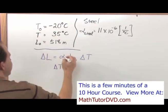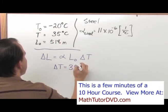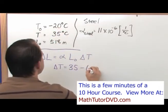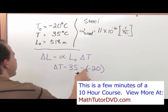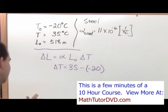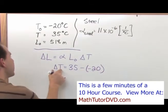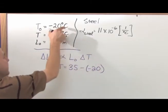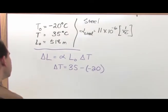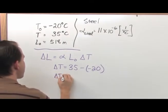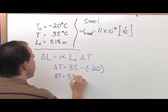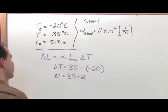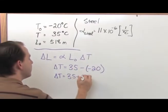Delta T is the final temperature, 35, minus the initial temperature which is negative 20. Be really careful with your signs here. It's very important—any time you're calculating a delta, it's the final value minus the initial value. The initial value being the negative 20. So when we do this, it's going to be 35 plus 20, because when you multiply the negative times the negative, plus 20.